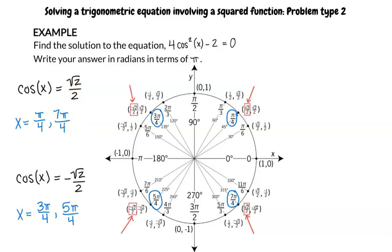So, to summarize, the angles which made cosine of x equal to root 2 over 2 true were pi over 4 and 7 pi over 4. The angles which made cosine of x equal to negative square root 2 over 2 true were 3 pi over 4 and 5 pi over 4.